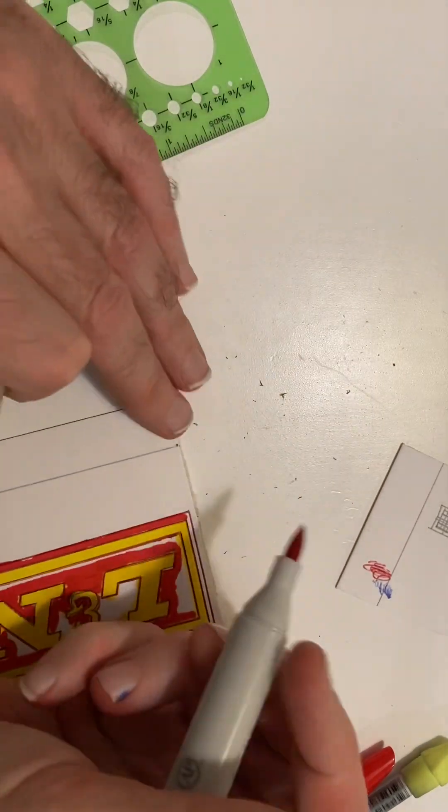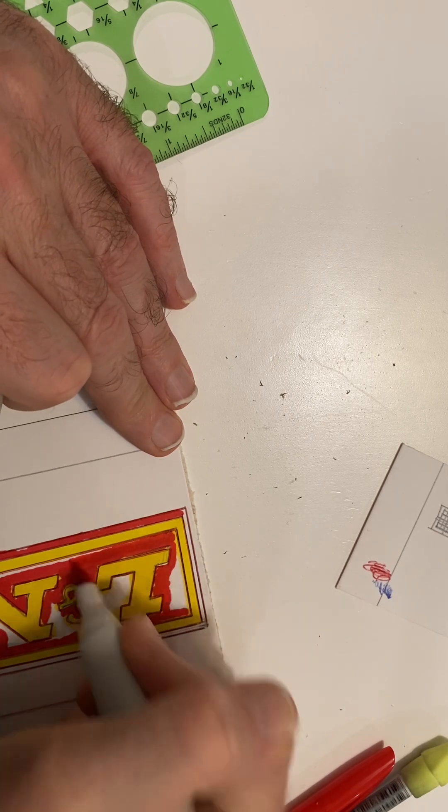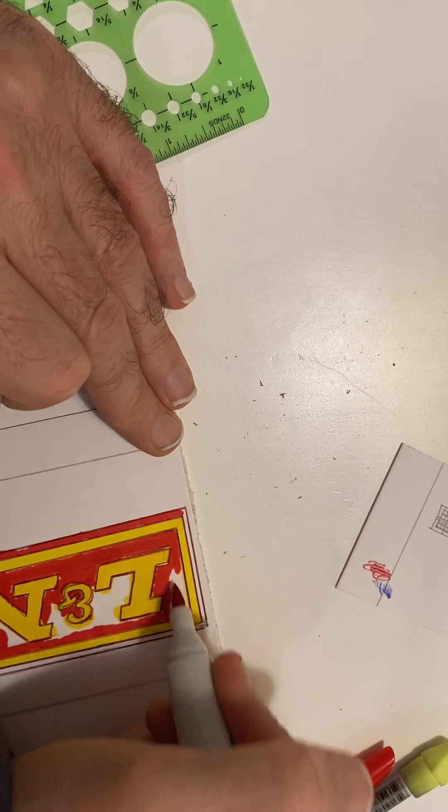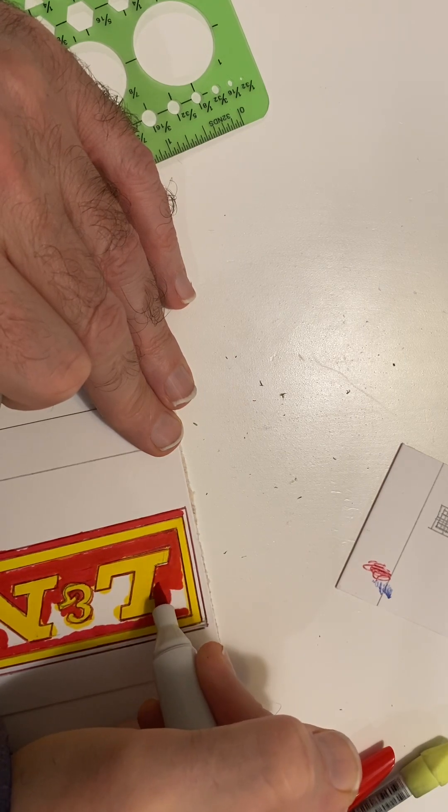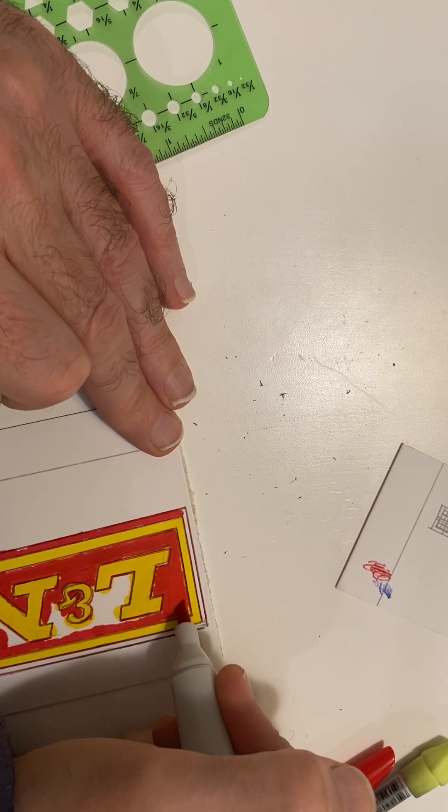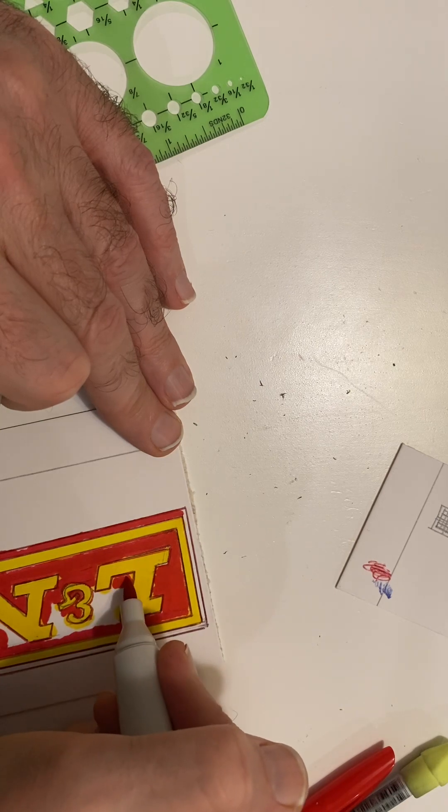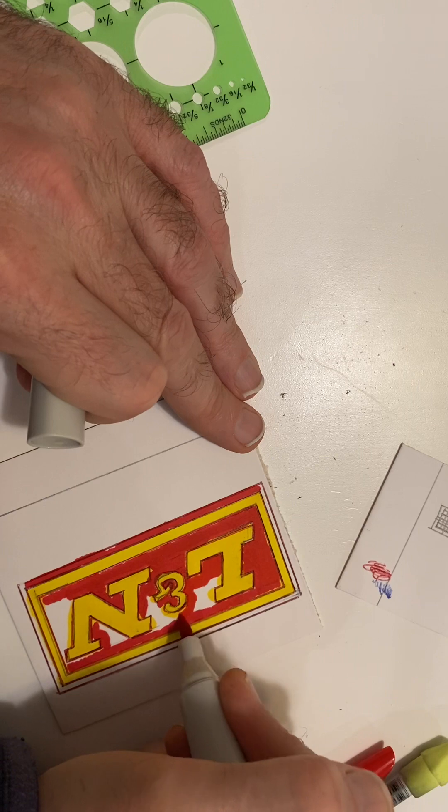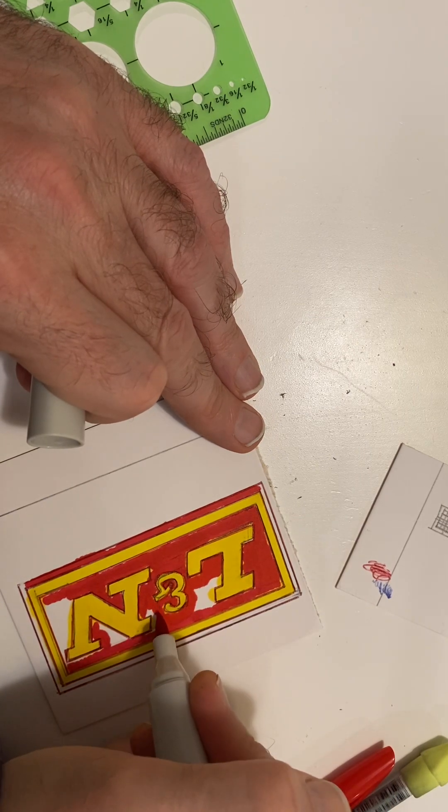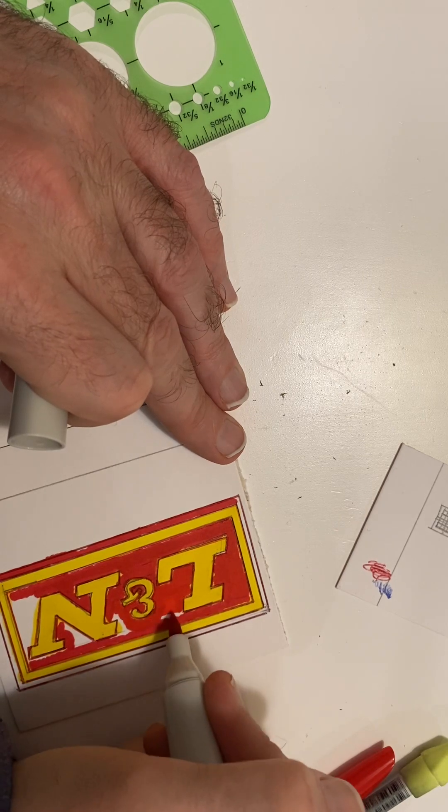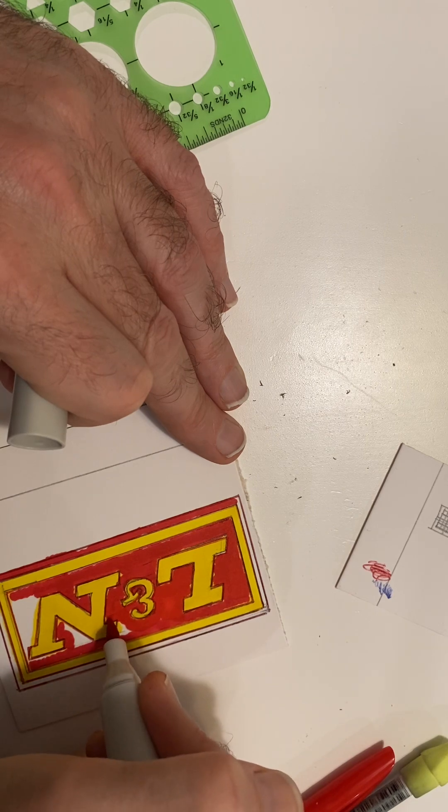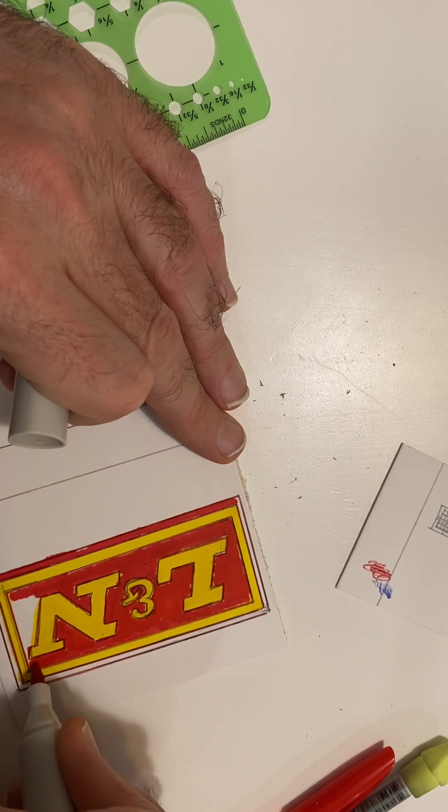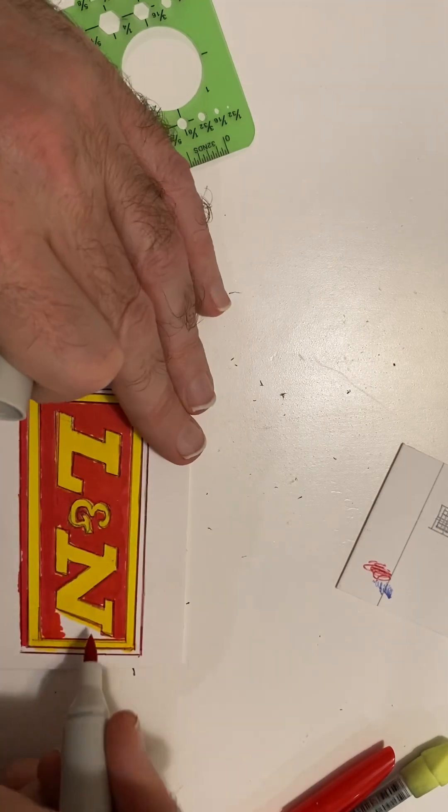Sometimes, part of why it's good to flip this too is that it gives you a moment's pause to breathe and reflect. Because what happens is when you're trimming all this, a lot of anxiety almost builds up about getting close to the letters and not getting any of the red into the yellow. Every time you spin it or take a moment's pause, you kind of just take a little break.